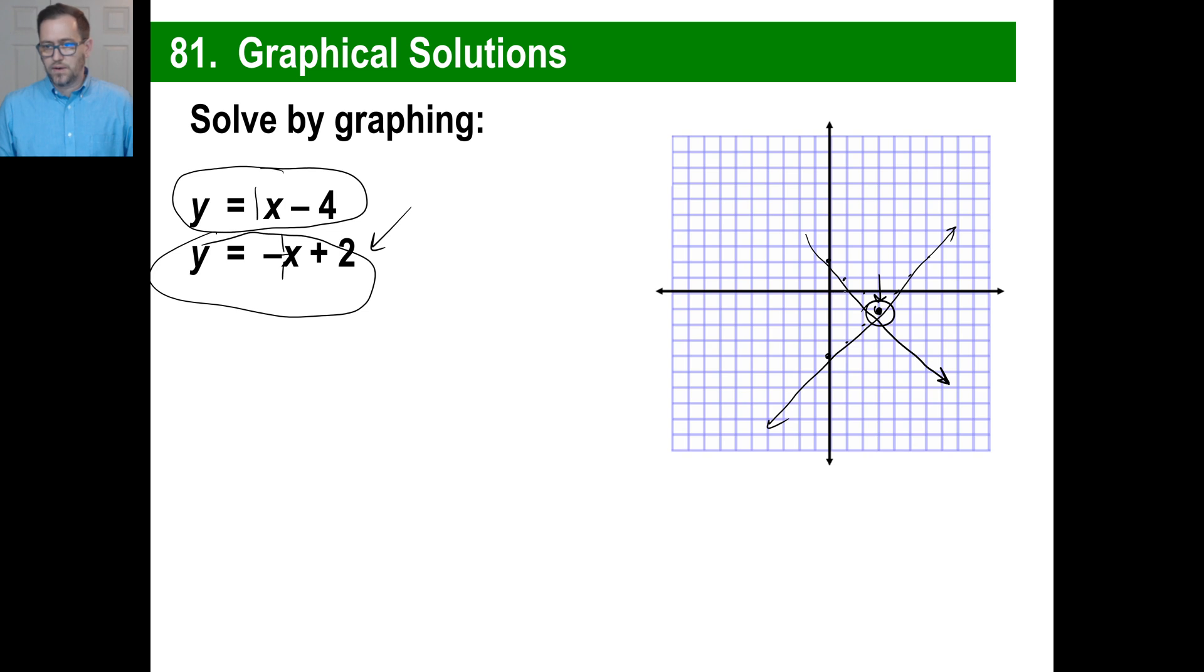And if you notice, the x value is 1, 2, 3, and the y value is negative 1. So we figured out the point is 3, negative 1. Well, again, that's the x and that's the y. And if you were to plug in x and y in both of those equations, it would work for both equations. Let's just try it. So if x is 3, y is negative 1. Y, negative 1, equals 3 minus 4. Yep, that works.